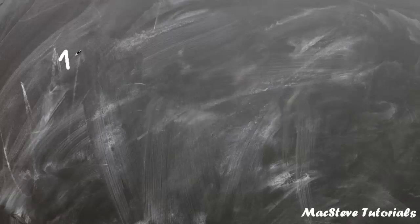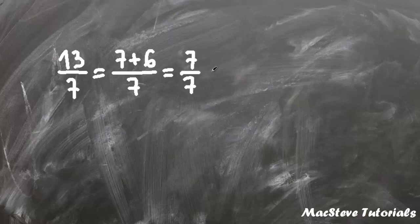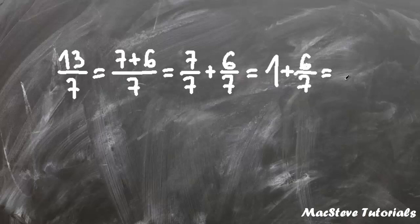Let's convert 13 sevenths into a mixed number. 13 sevenths can be written as 7 plus 6 over 7. Now this is same as 7 over 7 plus 6 over 7, which is same as 1 plus 6 sevenths. This is same as 1 and 6 sevenths.